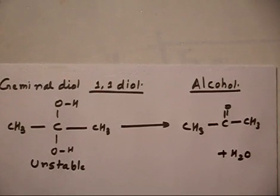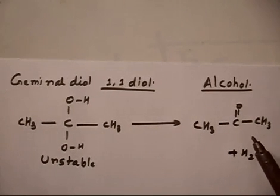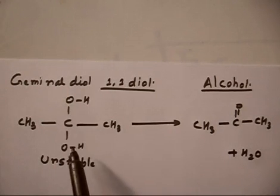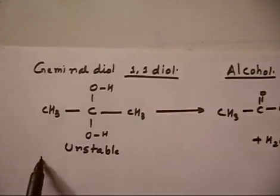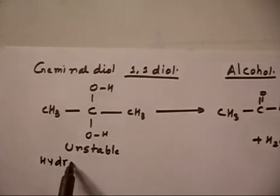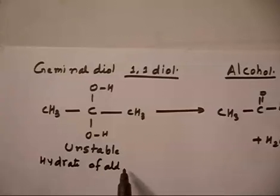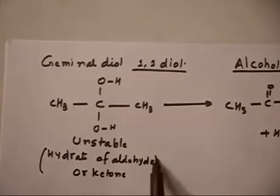Geminal diols are regarded as the hydrated form of ketones and aldehydes. If you take an aldehyde or ketone and add one molecule of water, you get the geminal diol. So geminal diols can be thought of as a hydrate of an aldehyde or ketone — in this case, a hydrate of a ketone.